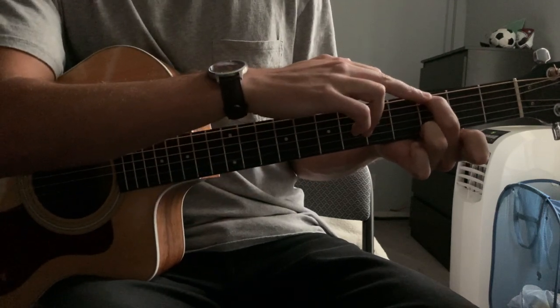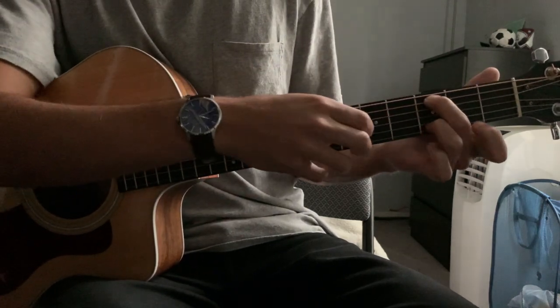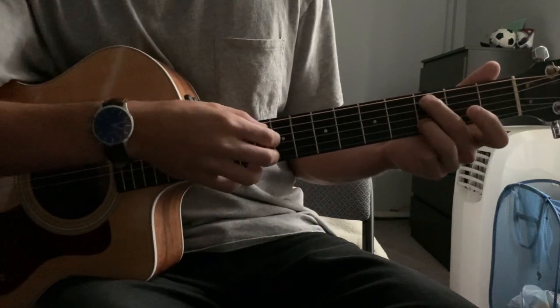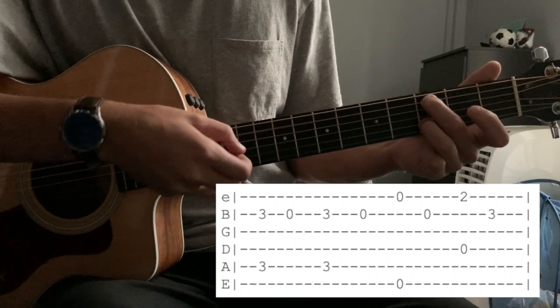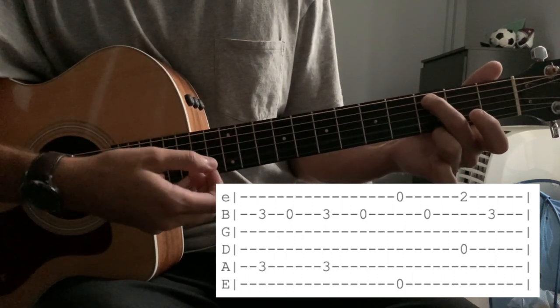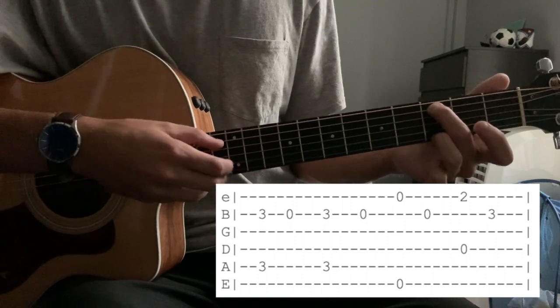We're going to have our middle finger on the 3rd fret of the A string, ring finger on the 3rd fret here of the D string, and we're going to pluck both those strings simultaneously, and then we're going to drop our ring finger and pluck that open B string. We're going to do that 2 times.